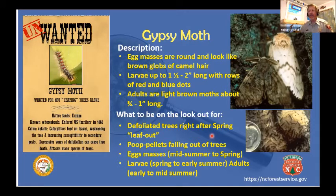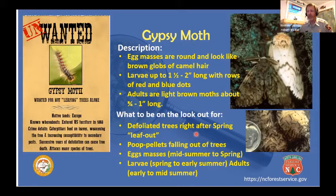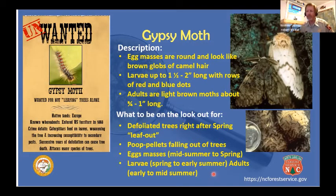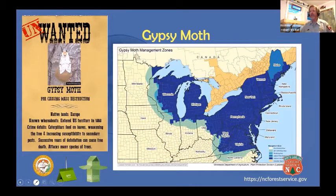When they're defoliating the tree and you walk through the forest, it'll sound like it's raining but you're getting hit with little pellets — that's caterpillar frass coming down. The egg masses are also how it's moved in firewood, because they'll lay eggs on anything: trees, the side of the house, the camper — it'll find lots of things to lay eggs on. In the spring the larvae will come out, and adults come out in early to mid-summer.